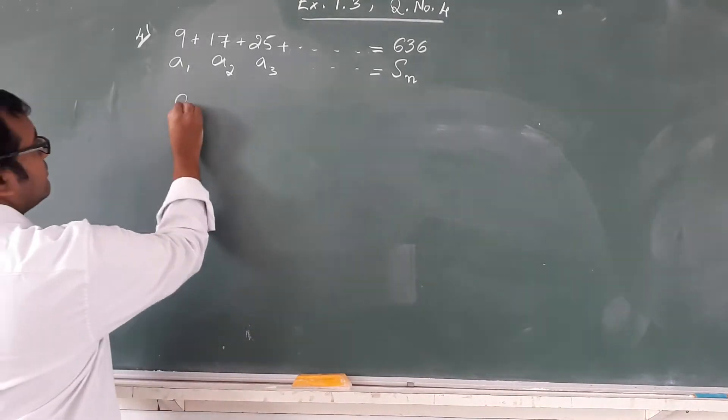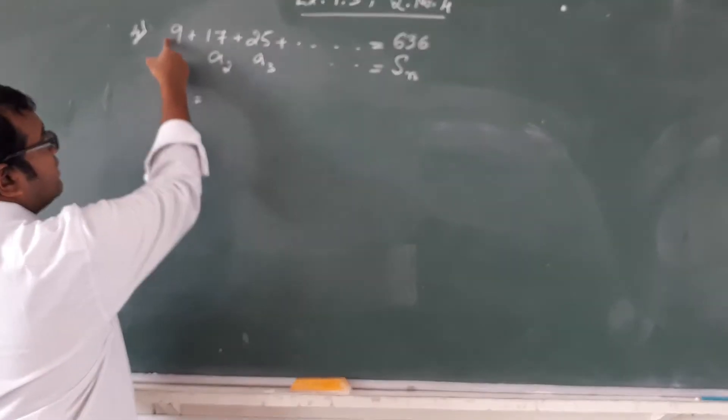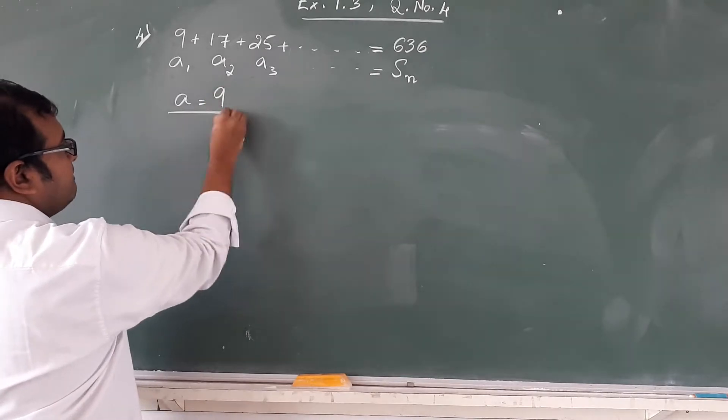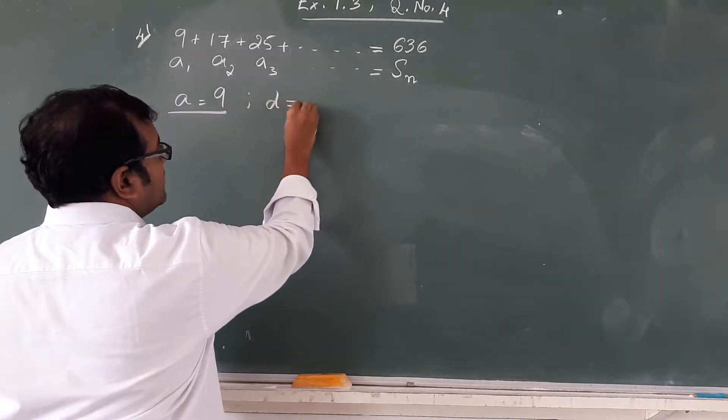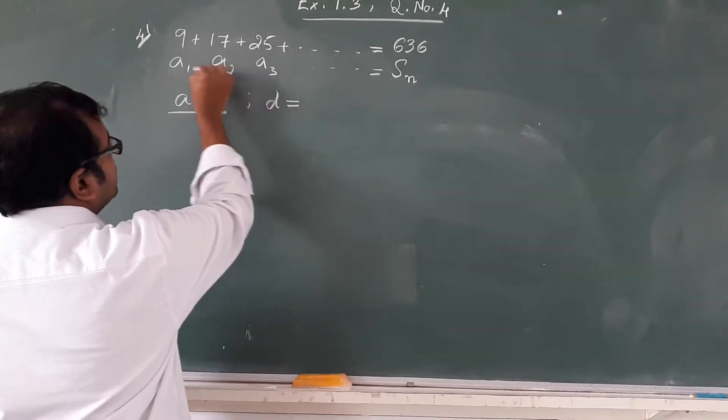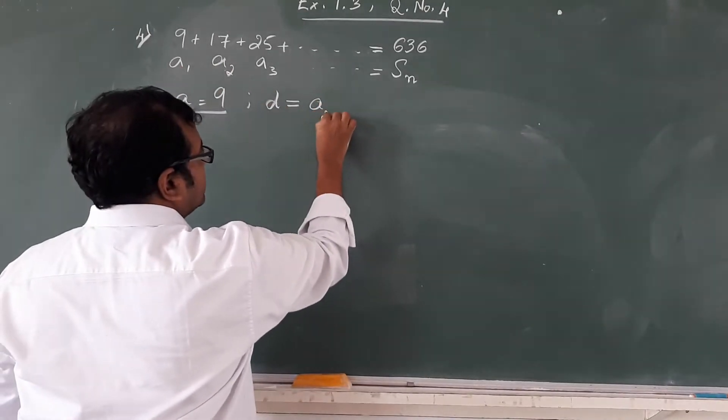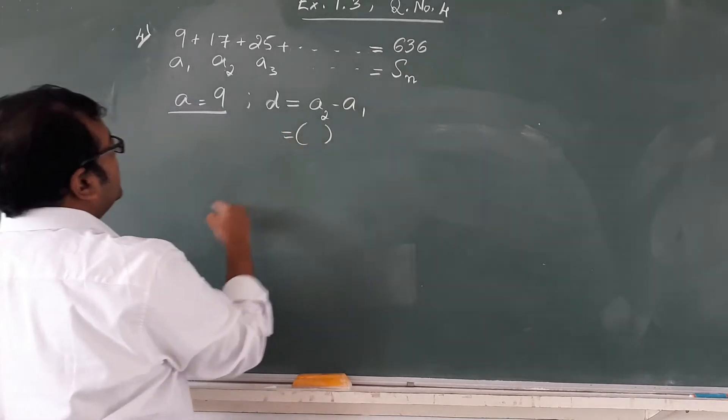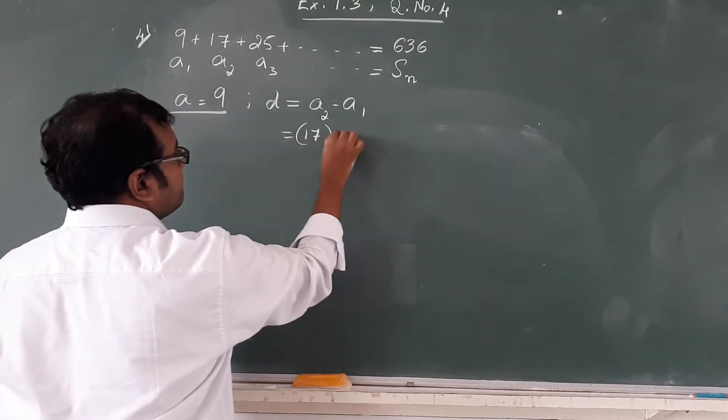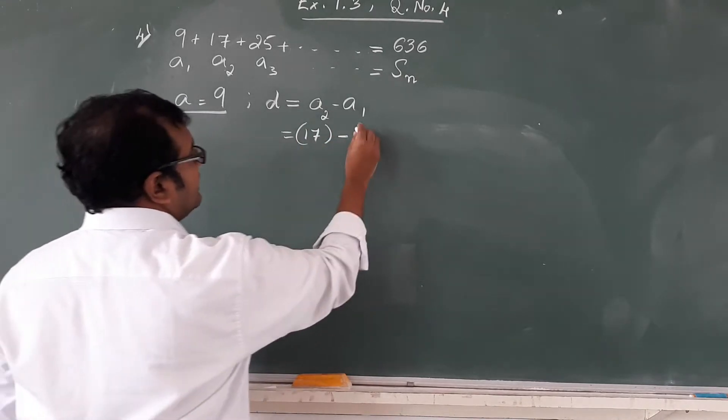The first term is nothing but A1 which is equal to 9, and we can of course find out the common difference D by A2 minus A1. Using the formula, you will substitute the values, A2 being 17 minus A1 being 9.